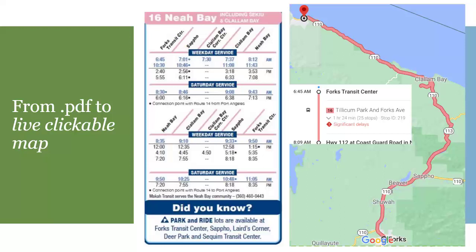When trying to read schedule details on a cell phone and find out when to return or connect to the next service, it can be really quite challenging, especially with an older phone. By standardizing and organizing this data, we're taking a PDF schedule and making it a clickable map where a rider can see their departure and arrival times without needing to carry a printed or electronic schedule.